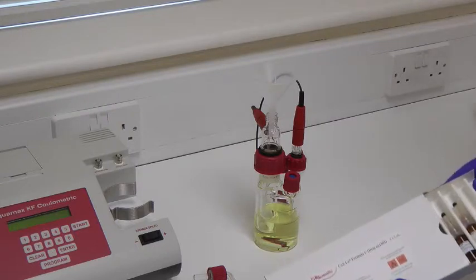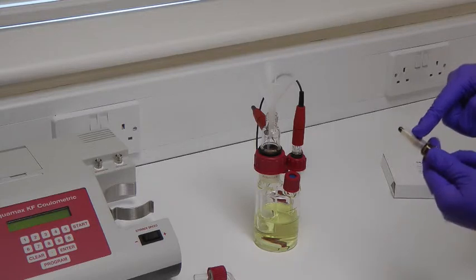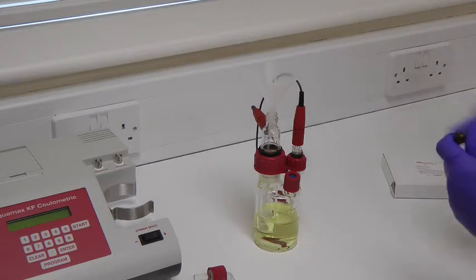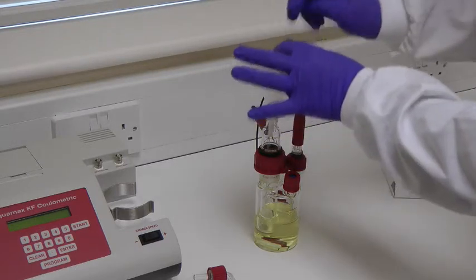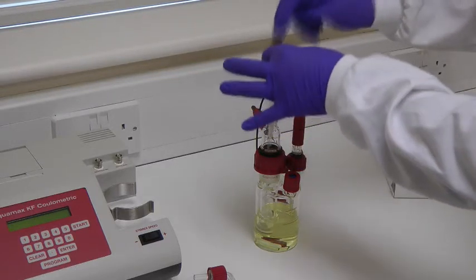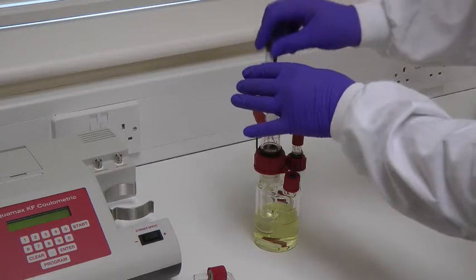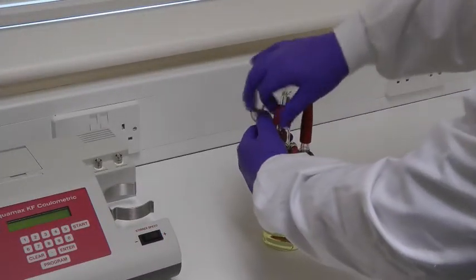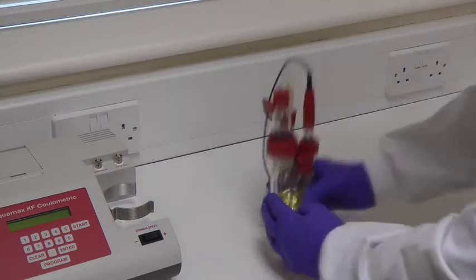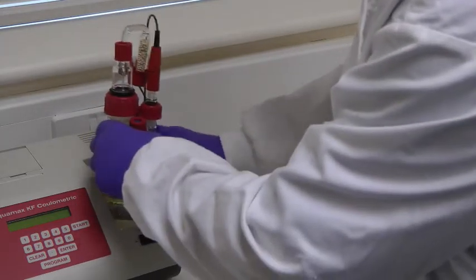Take the cathode reagent, snap the vial, which has a safety snapper already fitted, and pour the reagent into the inner chamber of the generator electrode. Reconnect the drying tube, relocate the glassware onto the Aquamax KF Coulometric, and connect the electrode leads onto the appropriate sockets.